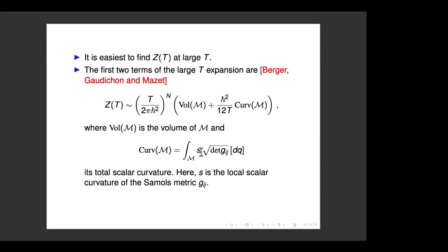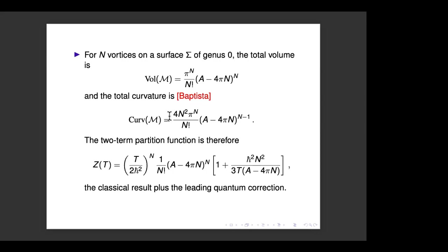The correction involves (ħ²/T) times (1/12) times the integral of the local scalar curvature of the moduli space with respect to its volume form — the total scalar curvature. There was a factor of 2 error in my earlier papers that I've corrected here.